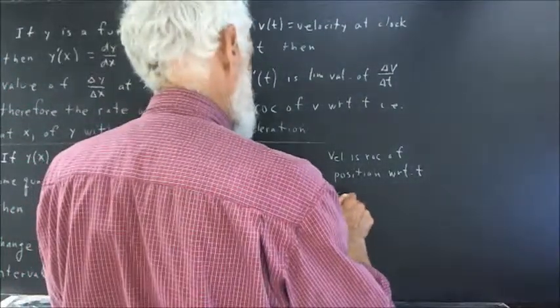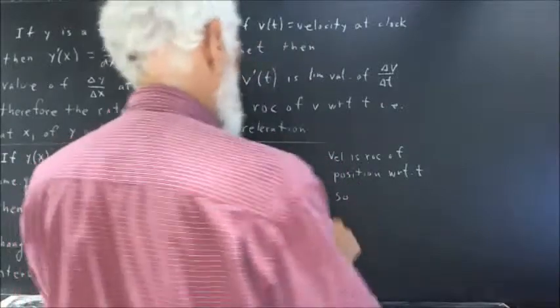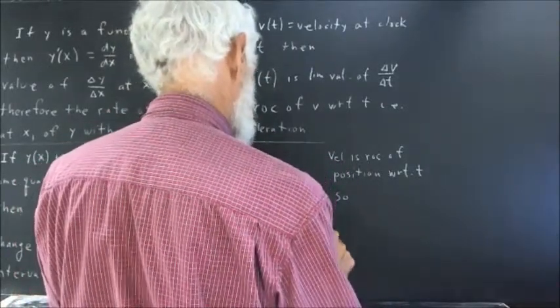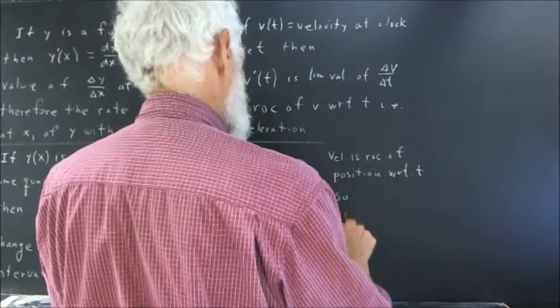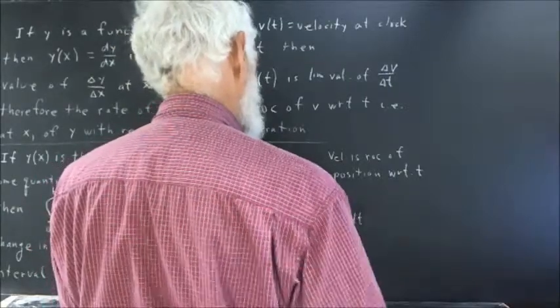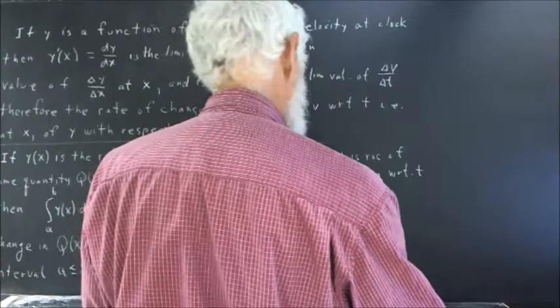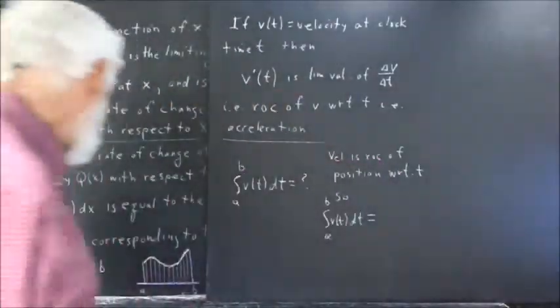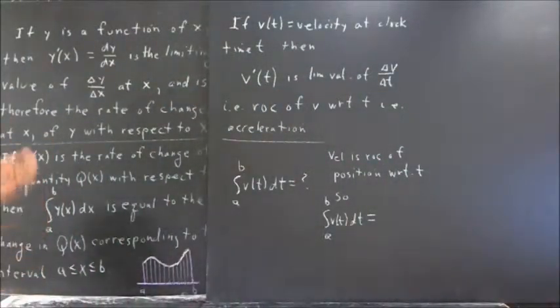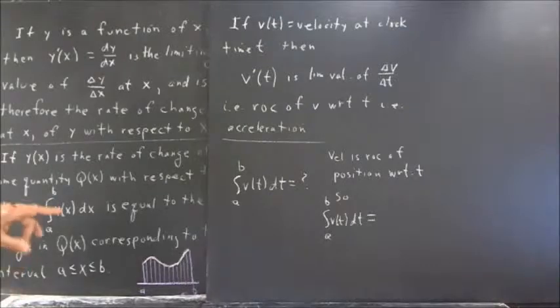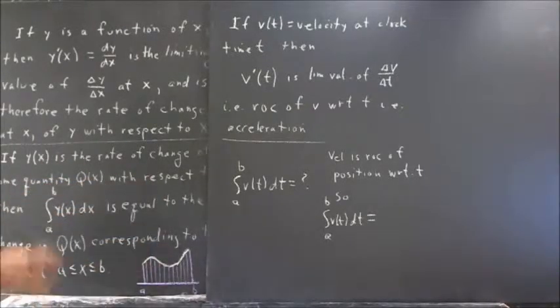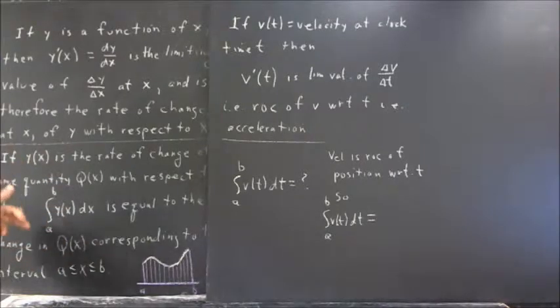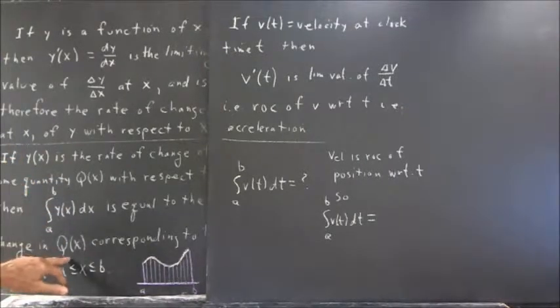So the integral from a to b of v of t dt is what? Well, just taking this statement here. If y of x is the rate of change of q of x with respect to t, then the integral of y of x from a to b is equal to the change in q of t.